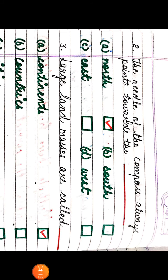The next question: the needle of the compass always points towards the ___. The options are: Option A, north; Option B, south; Option C, east; Option D, west. The correct answer is north.